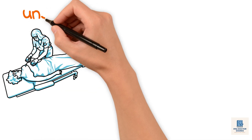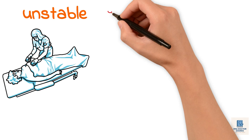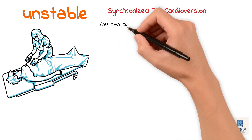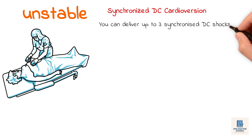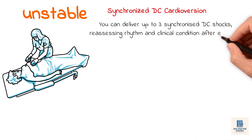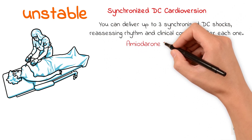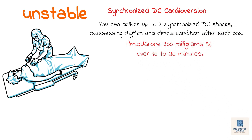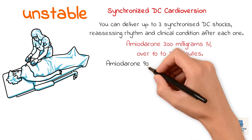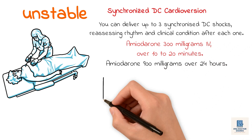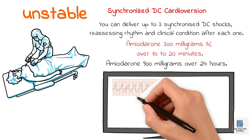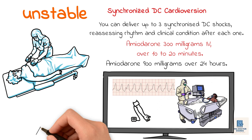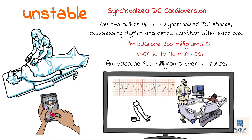If the patient is unstable, your immediate action is synchronized DC cardioversion, also known as a shock. You can deliver up to three synchronized DC shocks, reassessing rhythm and clinical condition after each one. If the shocks are unsuccessful, you then give amiodarone 300 mg IV over 10 to 20 minutes. Once that's given, start an infusion of amiodarone 900 mg over 24 hours. Keep monitoring the rhythm, blood pressure, and clinical response. If the patient remains unstable, consider further cardioversion and escalate for expert help.